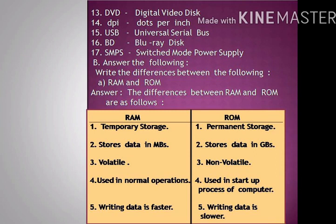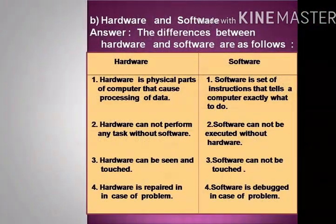Question number B: Write the differences between the following. Question A: RAM and ROM. RAM is a temporary storage; ROM is a permanent storage. RAM stores data in MBs; ROM stores data in GBs. RAM is volatile; ROM is non-volatile. RAM is used in normal operation, but ROM is used in the startup process of the computer. In RAM, writing data is faster, but in ROM, writing data is slower.